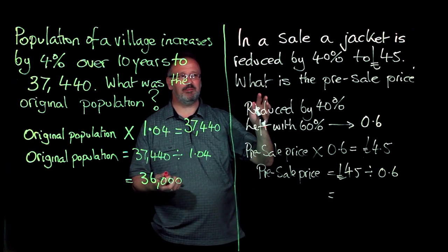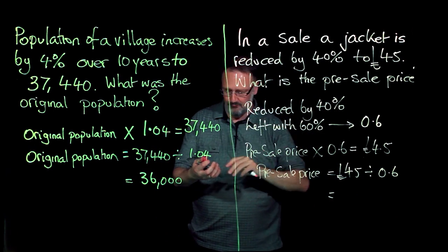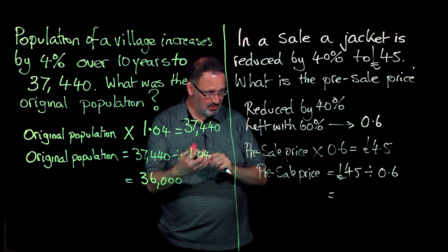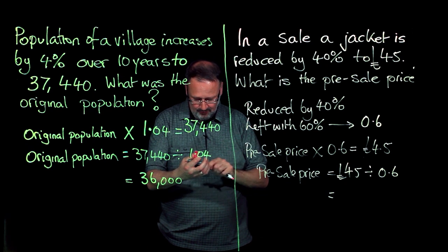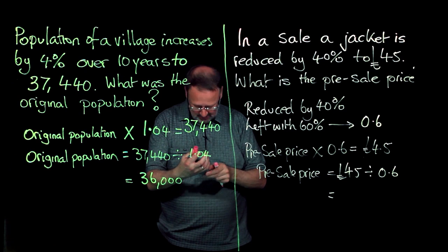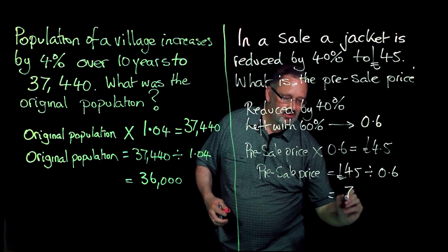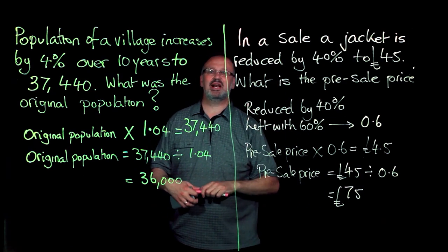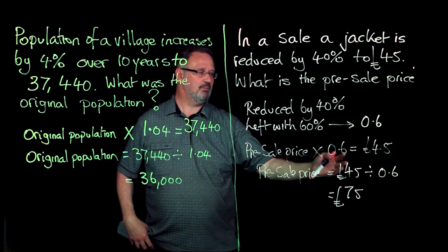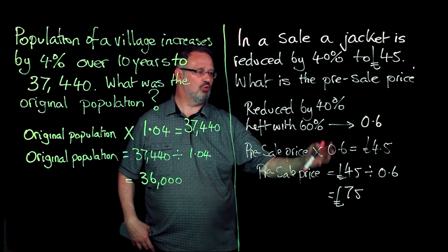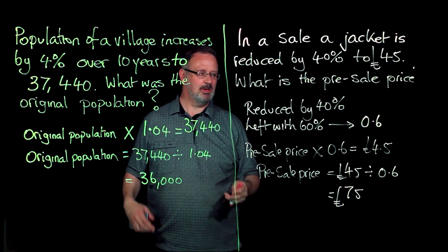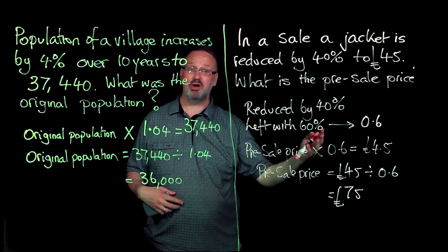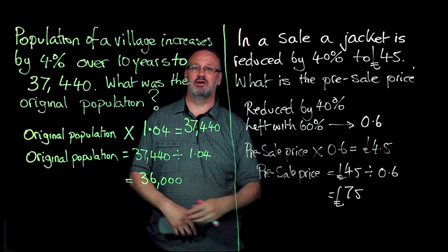Clearly I'm expecting the price to be greater than £45. 45 divided by 0.6 equals £75. That makes sense, just double-checking, because clearly my price beforehand, before the sale, will be greater than the sale price. Looks good. So remember here we divide by the multiplier.